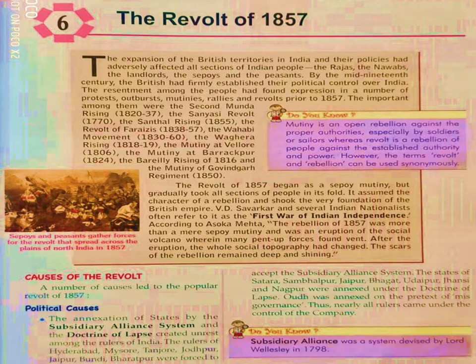The resentment among the people had found expression in a number of protests, outbursts, mutinies, rallies and revolts prior to 1857. Some of the important among them were: the Second Munda Rising (1822–37), the Sanyasi Revolt (1770), the Santhal Rising (1855), the Revolt of Faraizis (1838–57), the Wahhabi Movement (1830–60), the Vaghira Rising (1818–19), the Mutiny at Barakpur (1824), the Vaghira Rising (1816), and the Mutiny of Govindgarh Regiment (1850).